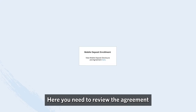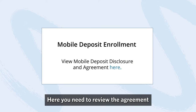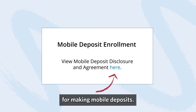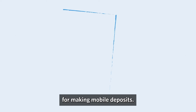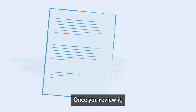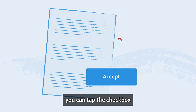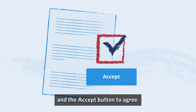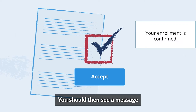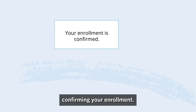Here you need to review the agreement for making mobile deposits. Once you review it, you can tap the check box and the accept button to agree. You should then see a message confirming your enrollment.